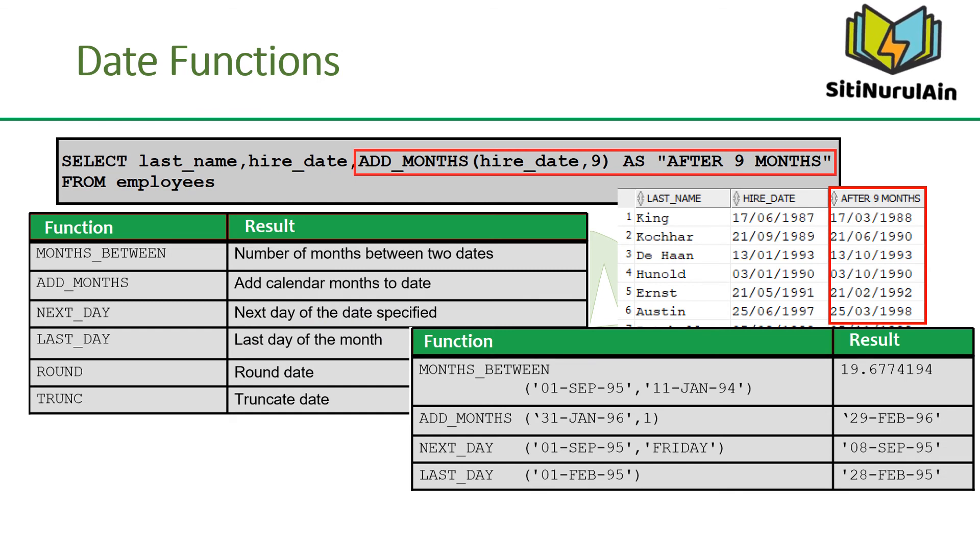Date functions operate on Oracle dates. All date functions return a value of the date data type except MONTHS_BETWEEN, which returns a numeric value. In the slide example, the ADD_MONTHS function adds 9 months to the date value of hire date for all employees.